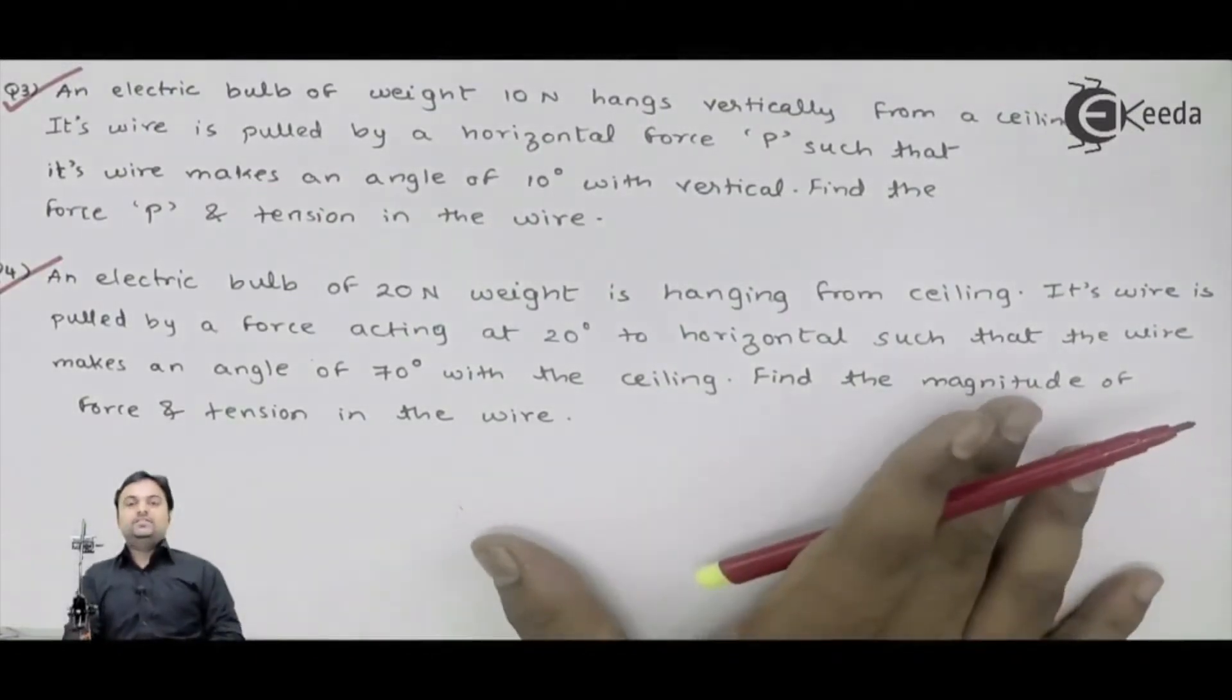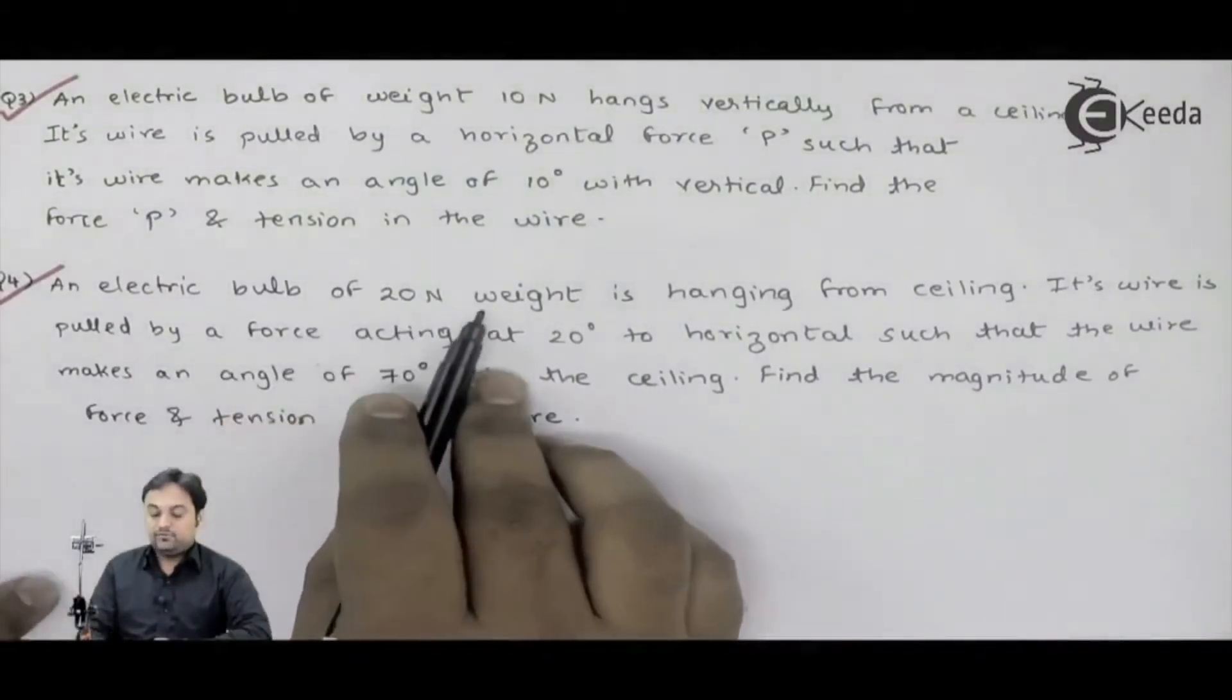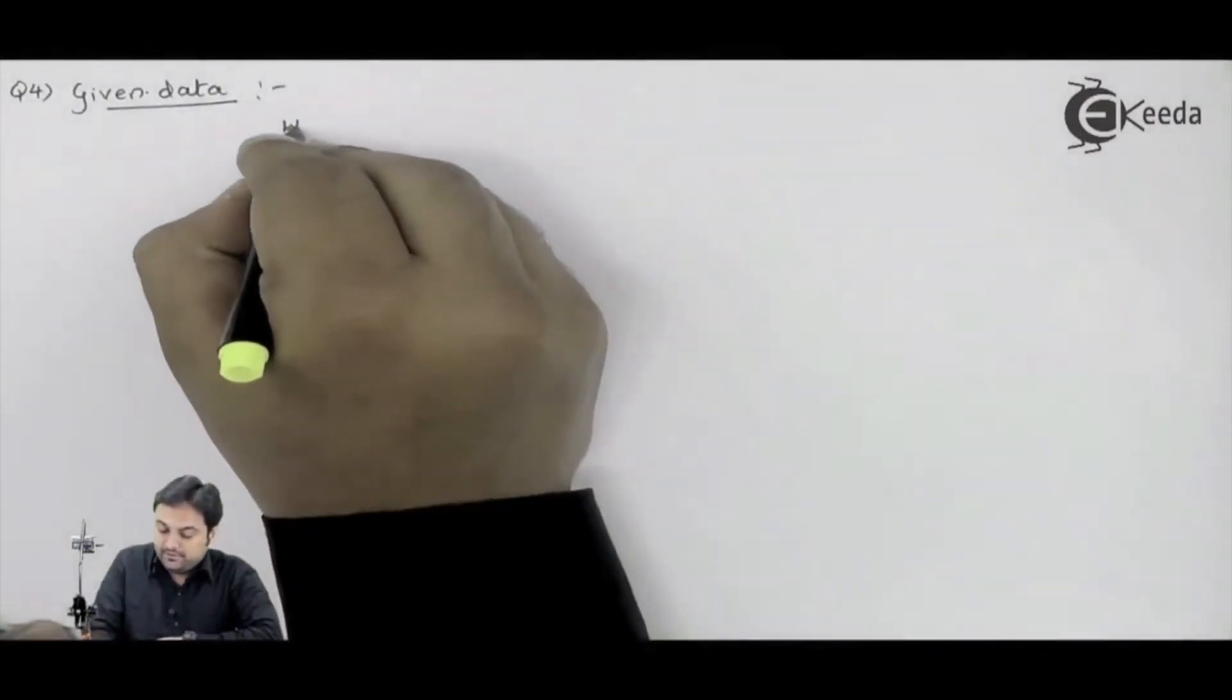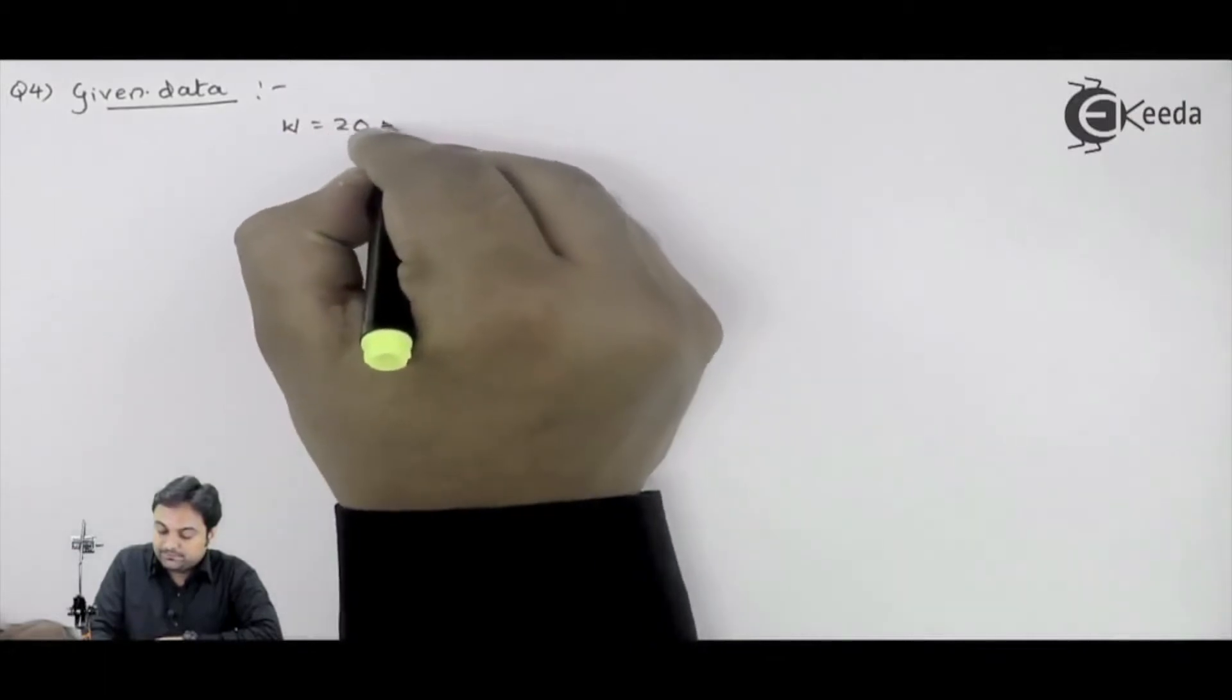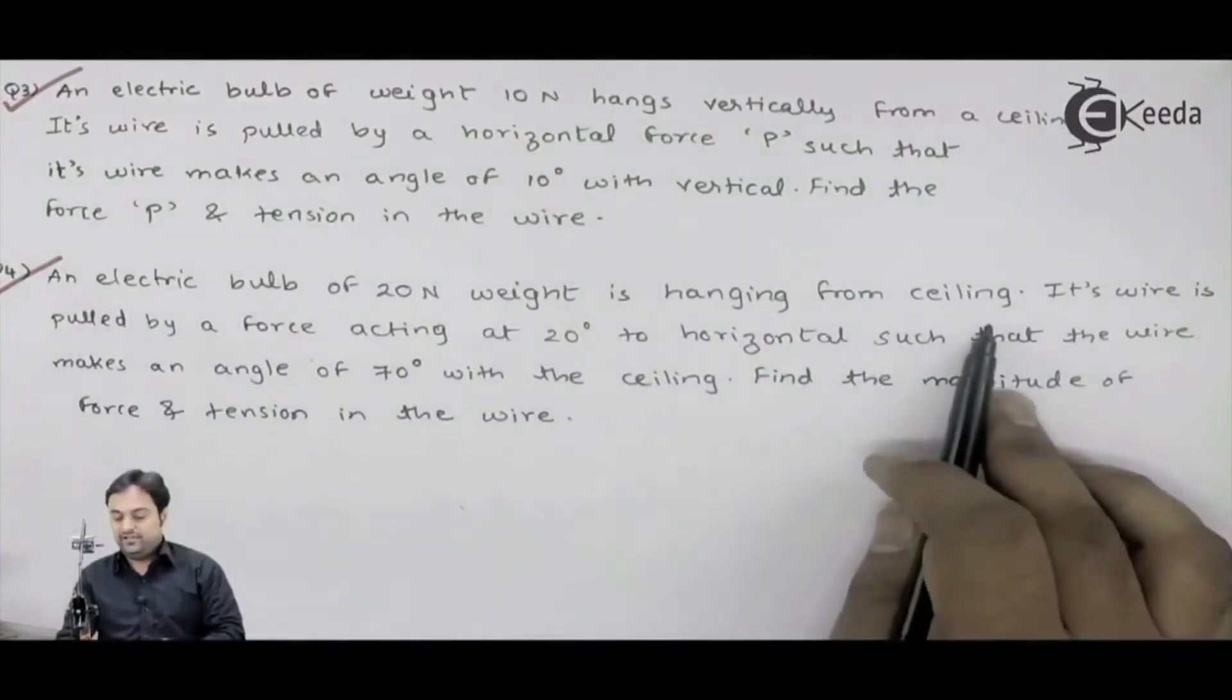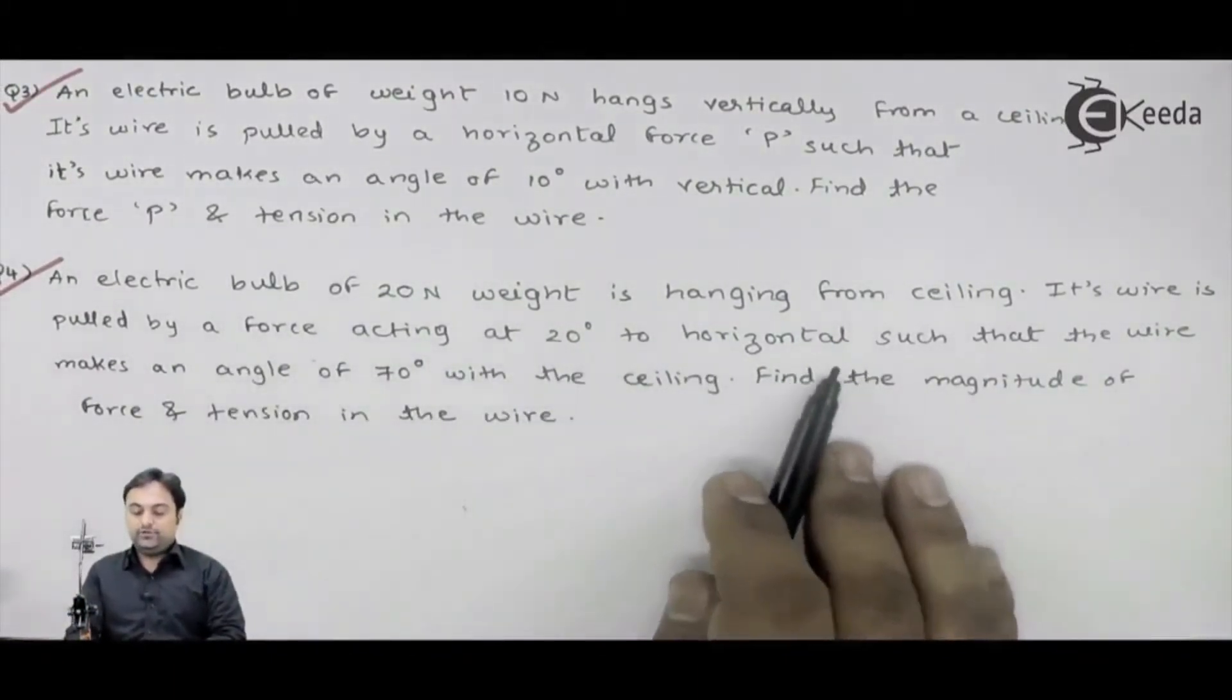Again, they had given some conditions here. With the help of these conditions, I will be writing the data. An electric bulb of 20 Newton weight - so the weight of the bulb is 20 Newtons, is hanging from ceiling. Its wire is pulled by a force acting at 20 degrees to horizontal.